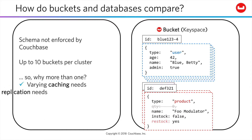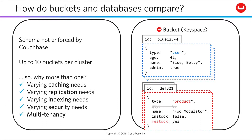So why would you ever have more than one bucket? You can have up to ten in any given cluster, but there's no firm need to align buckets with applications the way you might with a database. Instead, buckets serve as the boundaries for different concerns. They are the level at which you define varying caching, replication, indexing, and security needs. They're also a useful boundary for meeting multi-tenancy requirements.